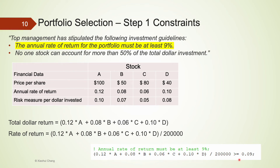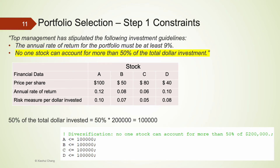The last set of constraints is for diversification purposes. No one stock can account for more than 50% of the total dollar invested. With $200,000 invested, 50% of that is $100,000. So we require A ≤ $100,000, B ≤ $100,000, C ≤ $100,000, and D ≤ $100,000. This is the last set of constraints.